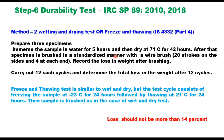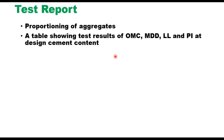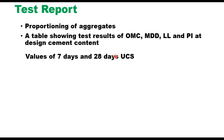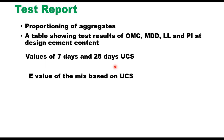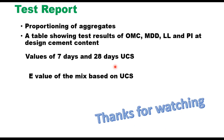The final test report should consist of: proportioning of aggregates, a table showing test results for OMC, MDD, liquid limit, plastic limit, impact value, and design cement content, the UCS values at seven days and 28 days (28-day UCS is required to determine the E value), and the E value of the mix based on UCS. That is how you design a cement treated subbase layer.